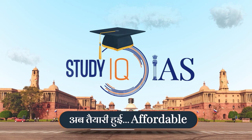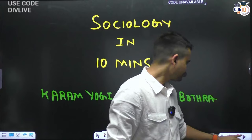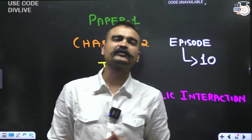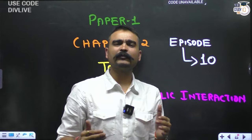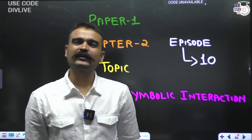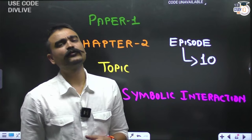Hello friends, my name is Divakar Botra, welcome to the next episode of Sociology in 10 Minutes, Paper 1, Chapter 2, Episode 10. The topic for today - if you look at the past 5 years, perhaps in the first 2 chapters, the most important topic is non-positivist methodologies. In non-positivism, first we will do symbolic interactionist, episode 11 will cover phenomenologist and ethnomethodologist.